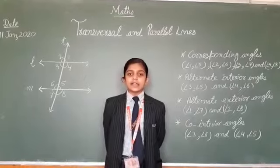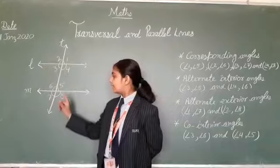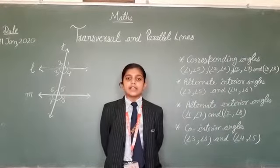Third, alternate exterior angles: angle 1 and angle 7, angle 2 and angle 8. Each pair of alternate exterior angles are equal.